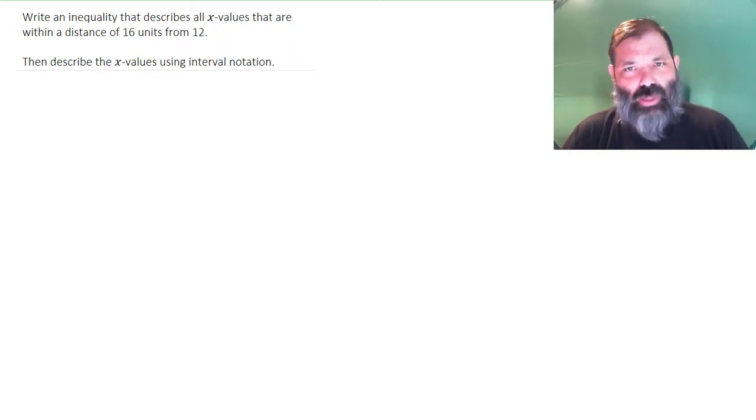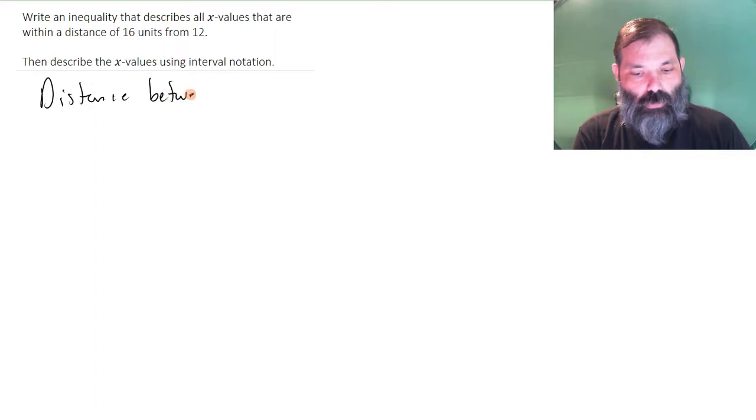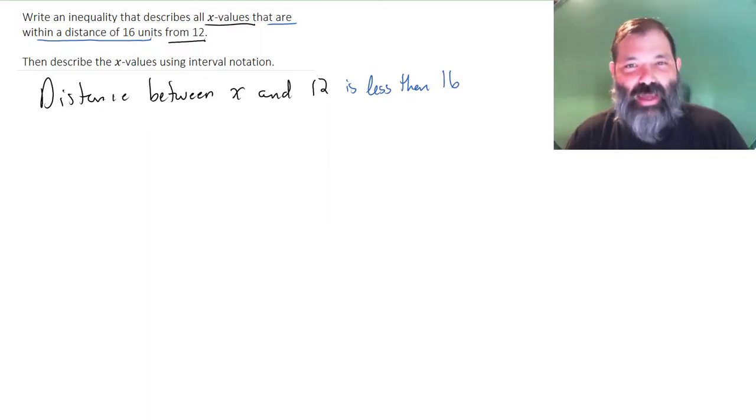The way I think about this is I'm going to rewrite that sentence. The distance between x and 12, all x values that are within a distance from 12, so the distance between x and 12 is within a distance of 16. We need that distance between x and 12 is less than 16. That's how I read that sentence.